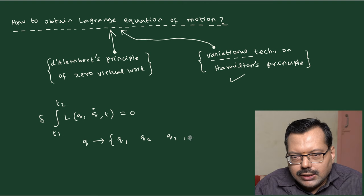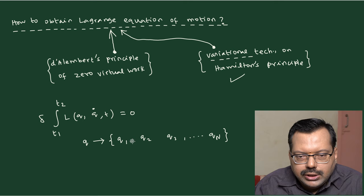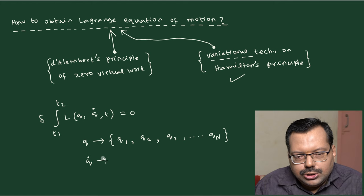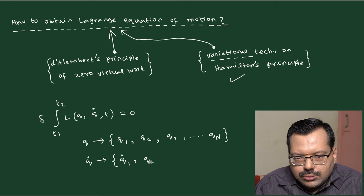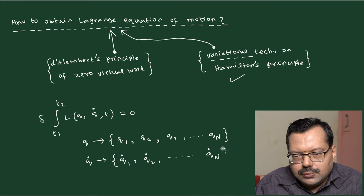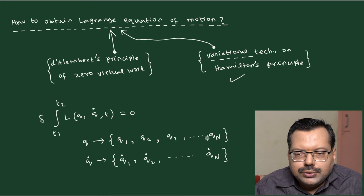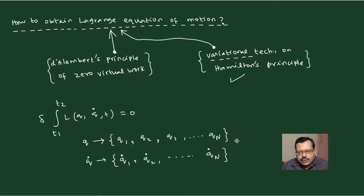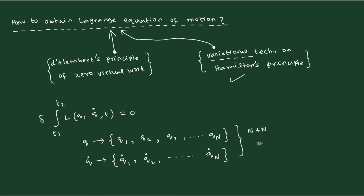Similarly, q-dot is the set of all q-dots: q1-dot, q2-dot, ..., qN-dot. The number of q-dots equals the number of q's — both are N. So the phase space involves N q's and N q-dots, giving 2N variables total. The number of degrees of freedom N is obtained by starting with the maximum number of coordinates possible and subtracting the number of constraints.